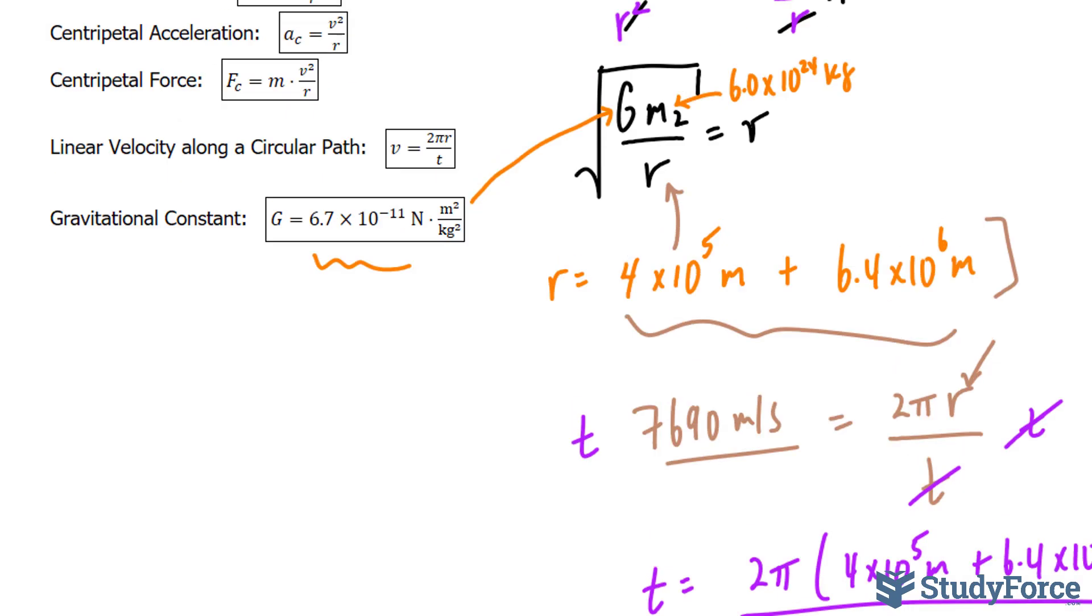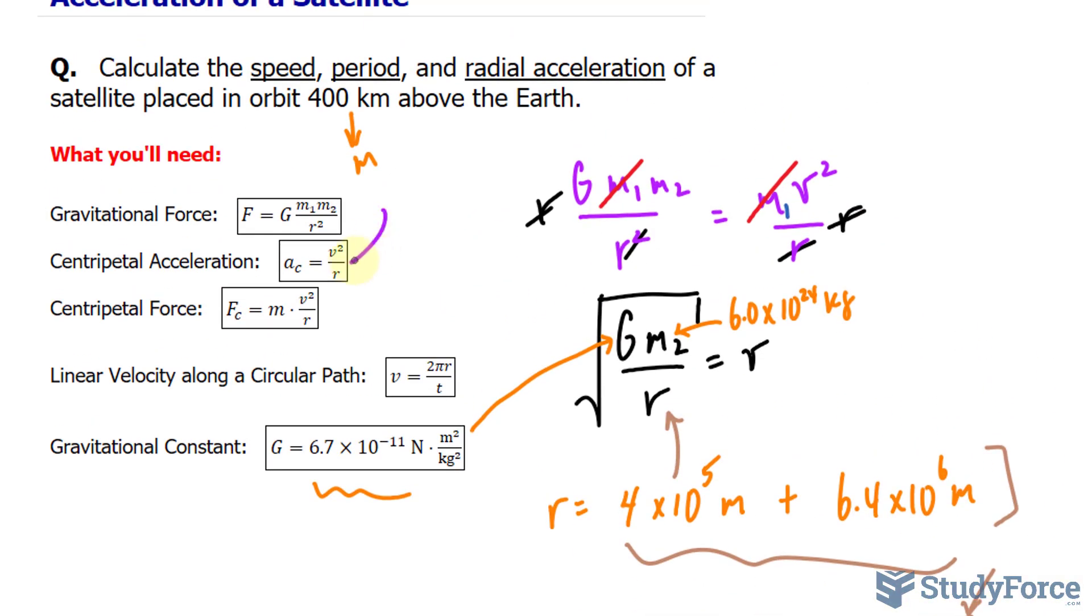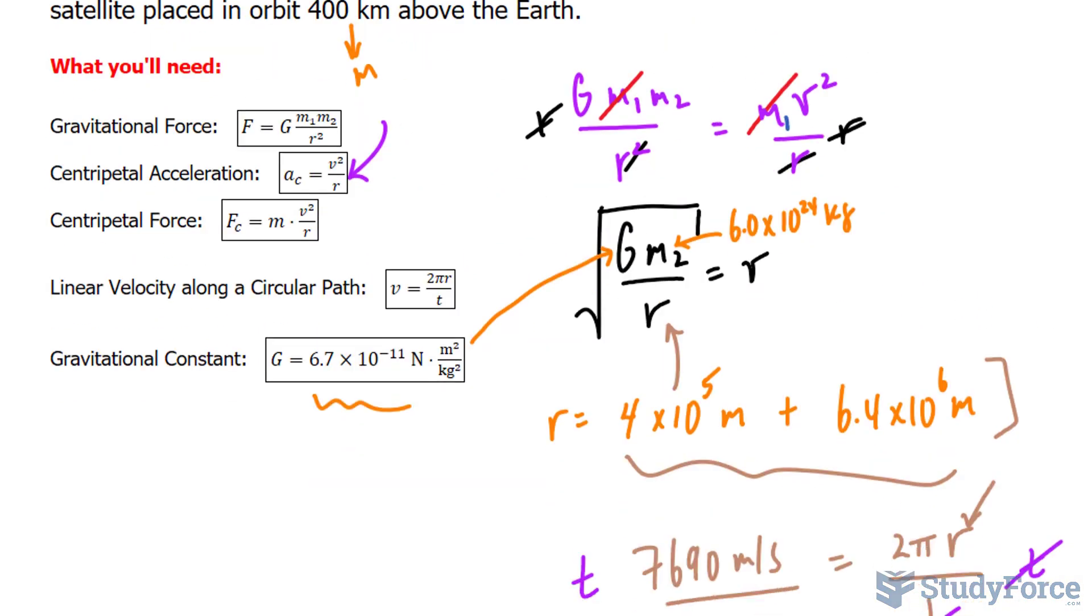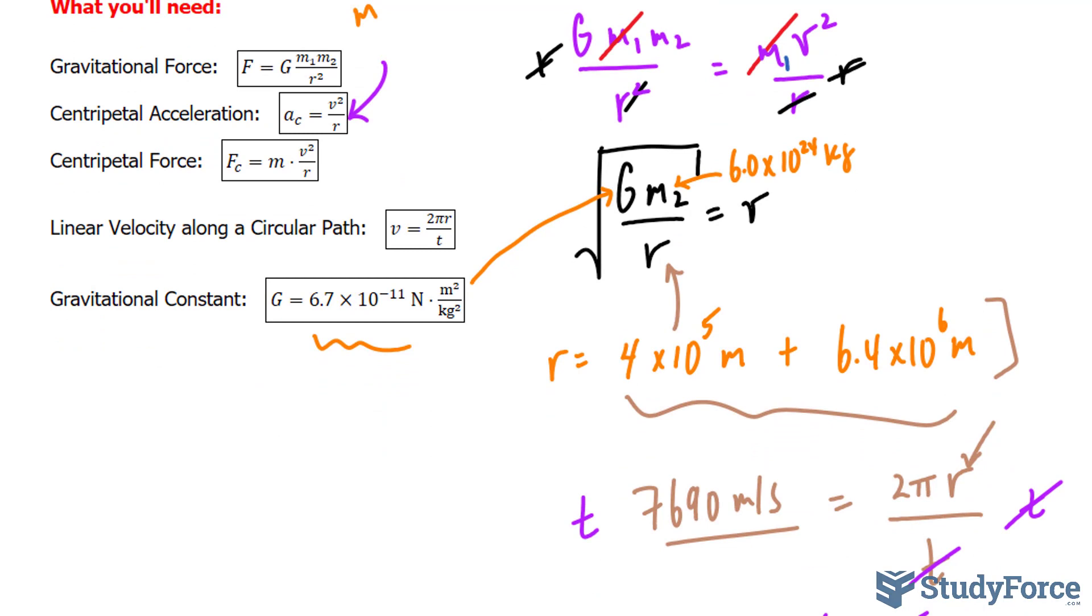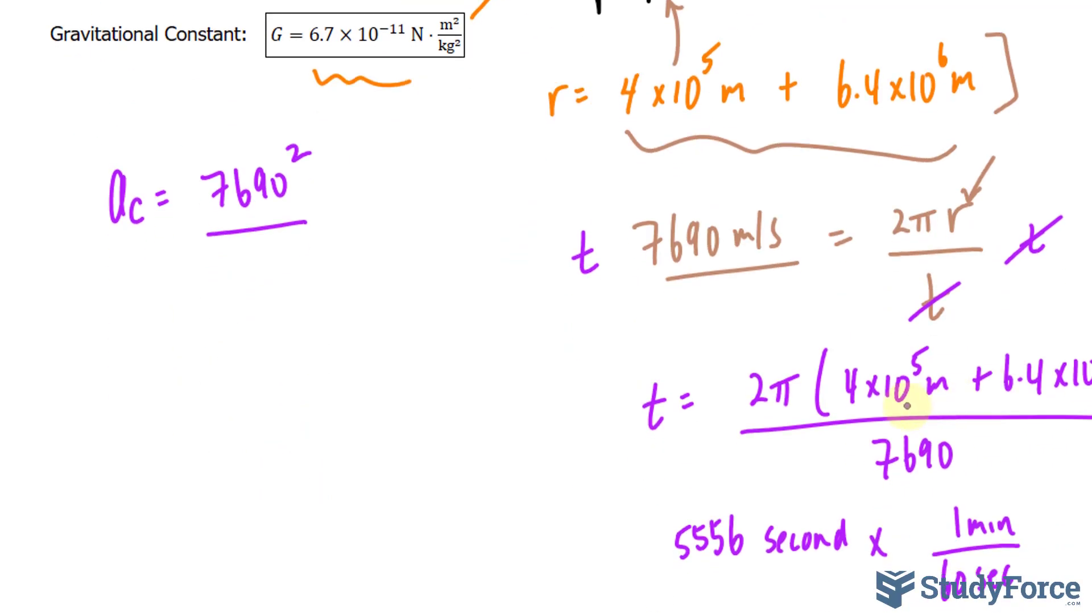Lastly, the radial acceleration, you use this formula. So you take whatever your velocity was, you square it, and you divide it by the radius. The velocity was 7,690, raise that to the power of 2, and then divide it by the sum of those two numbers.